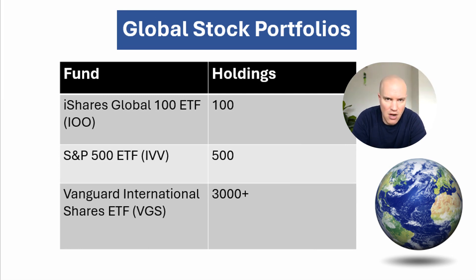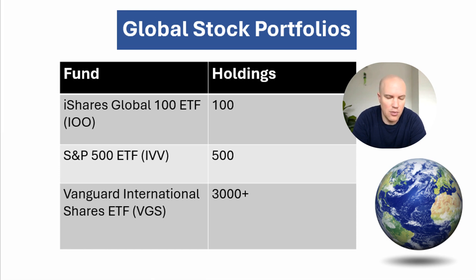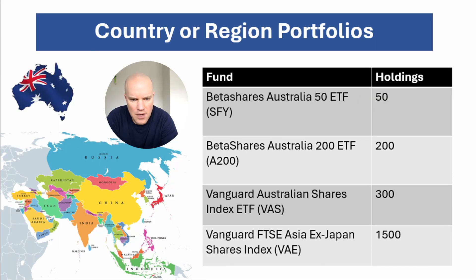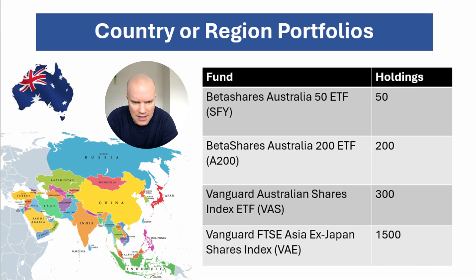Personally, I find less diversification is actually better — or good enough for me — so I'm on the side of 100 as opposed to 3,000 if I'm looking for a global ETF. Now if you want to narrow in on a specific country or region of your choosing, you can build a portfolio with one ETF that way as well. These portfolios can allow investors to take advantage of specific economic conditions, growth, and market trends in one particular area or region.